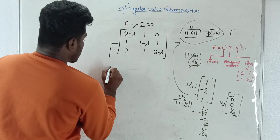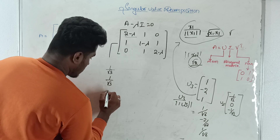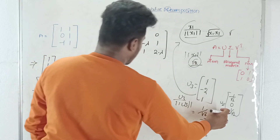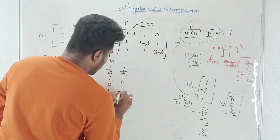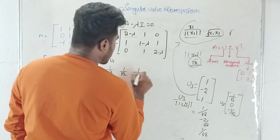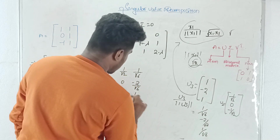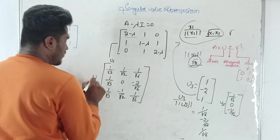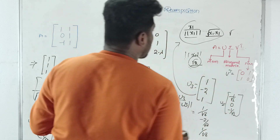Combining u1, u2, and u3 as columns, the U matrix is: [[1/√3, 1/√2, 1/√6], [1/√3, 0, -2/√6], [1/√3, -1/√2, 1/√6]]. This completes the U matrix computation.